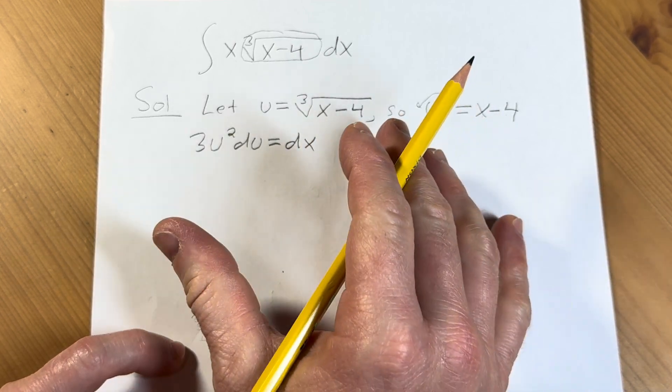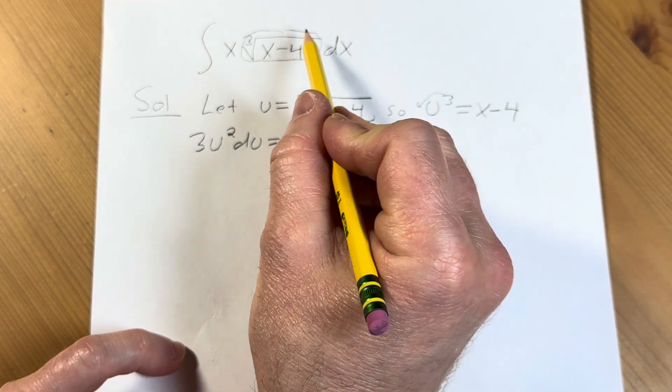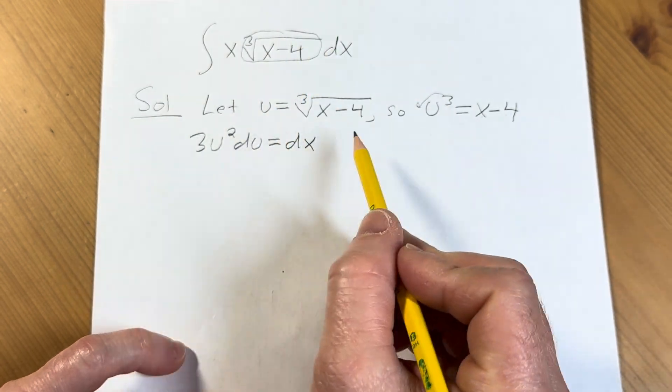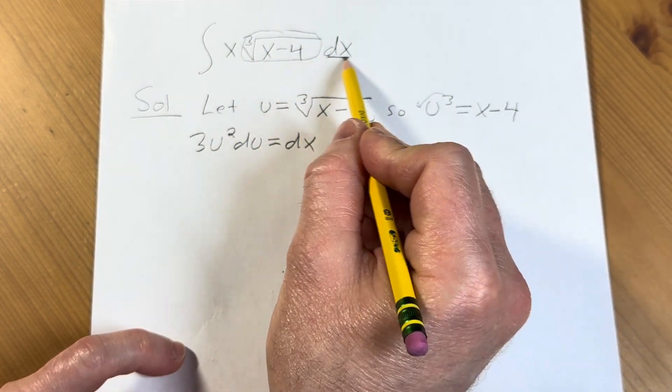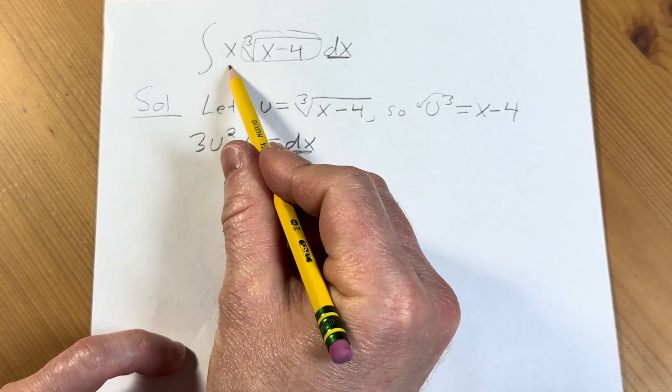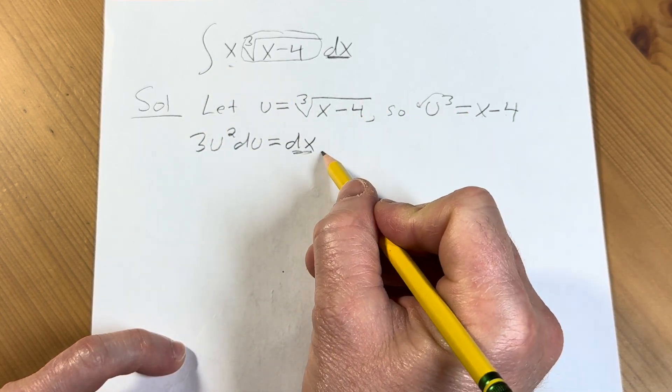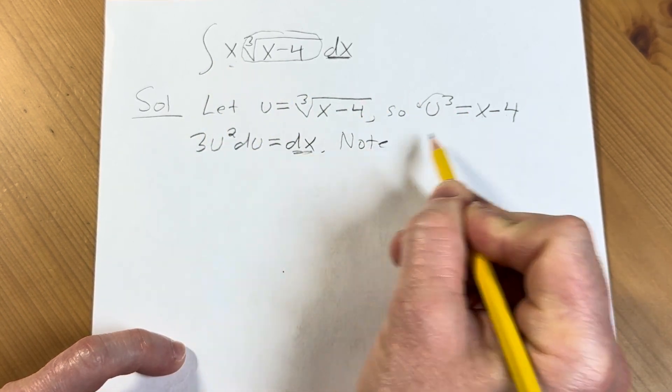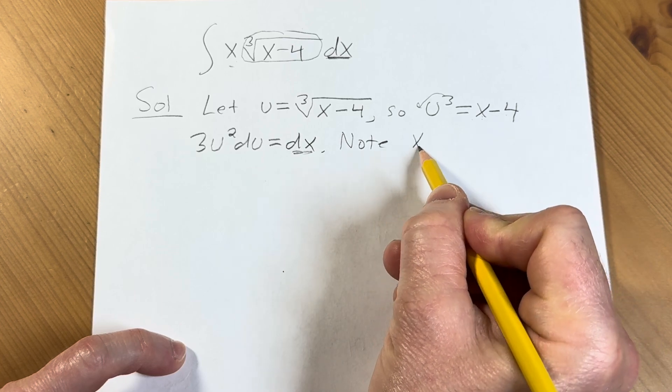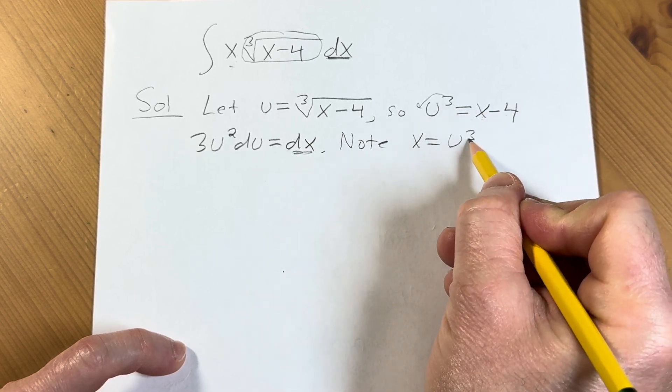Now we're in a really good position to go ahead and make the substitution. So this piece here is going to be our u. And our dx is going to be this. And our x, well, we can solve this for x. So note, we can add 4 to both sides. So x is equal to u cubed plus 4.